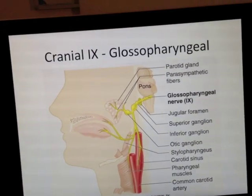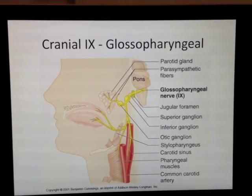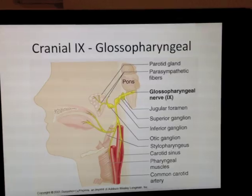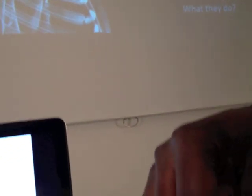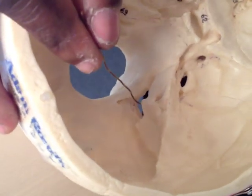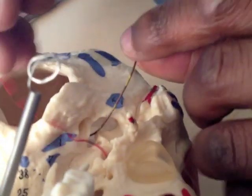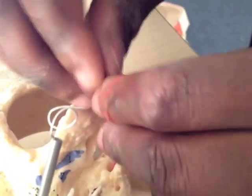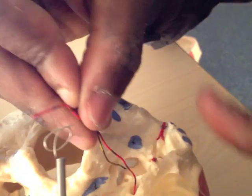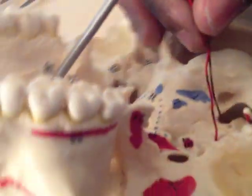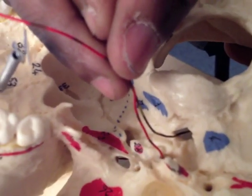Next, I'll show you where the glossopharyngeal nerve emerges from. There's the glossopharyngeal nerve, and that's the jugular foramen, and that's it coming out here. As you can see, if I place that down like this — in red here is the carotid canal.